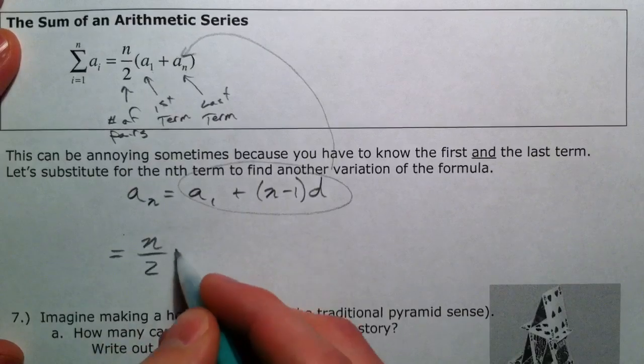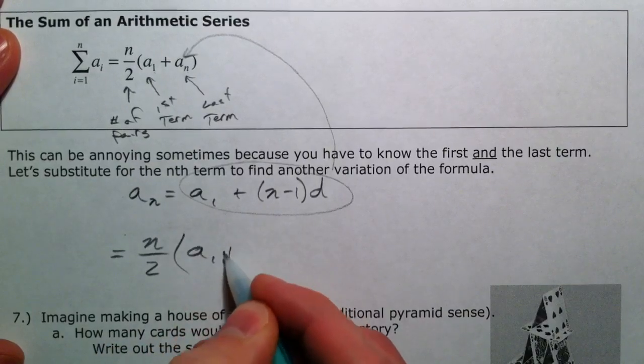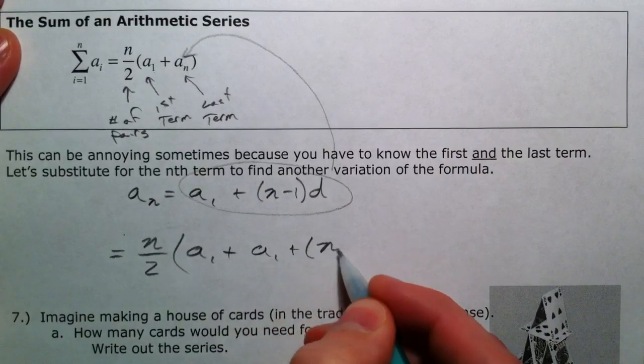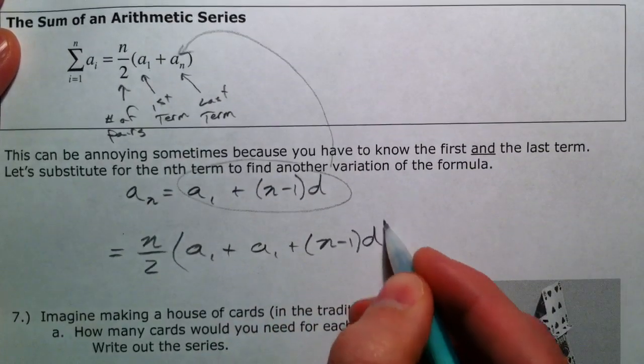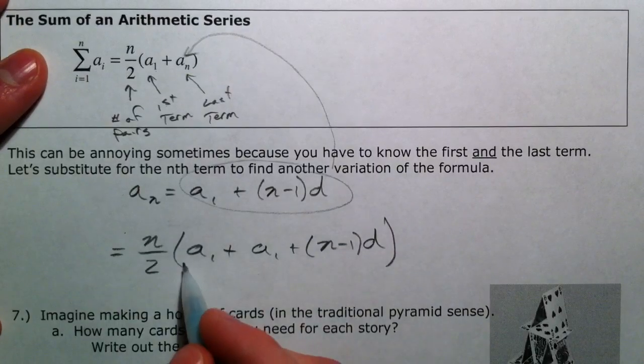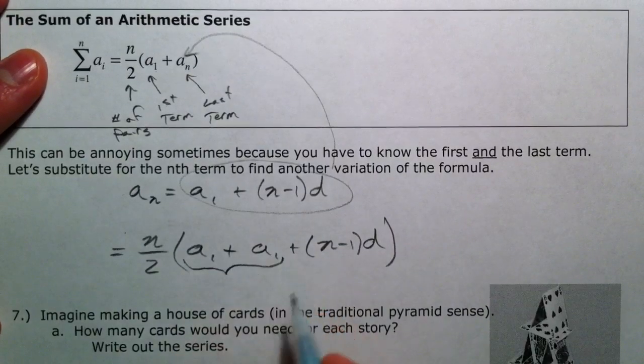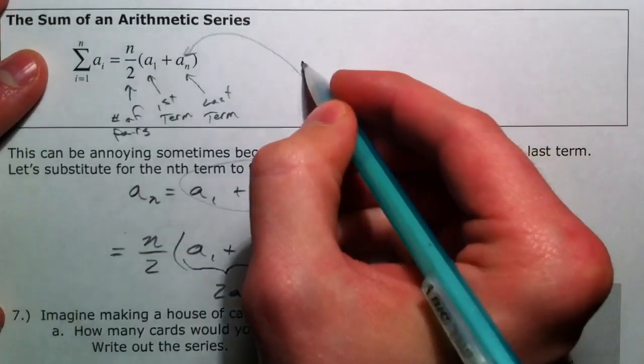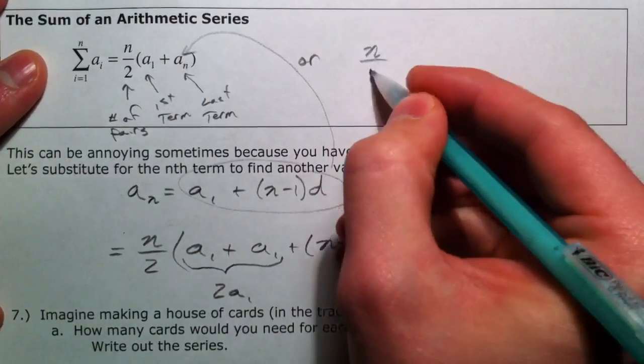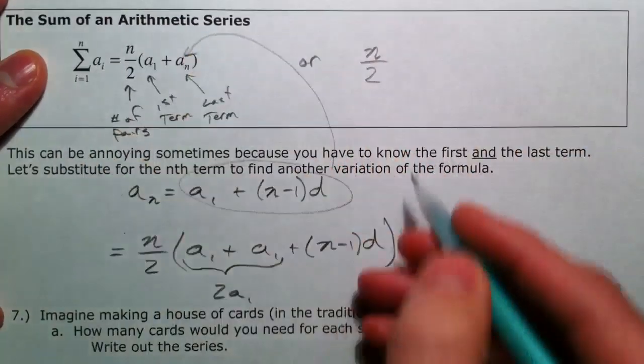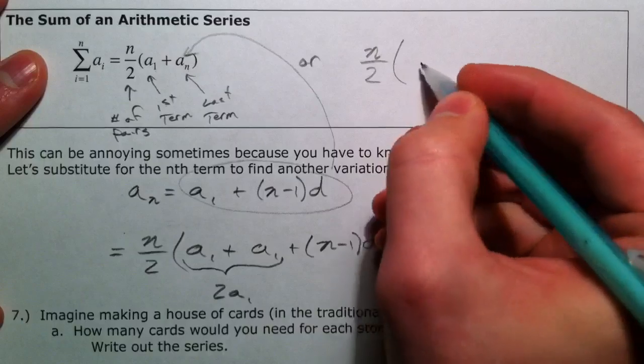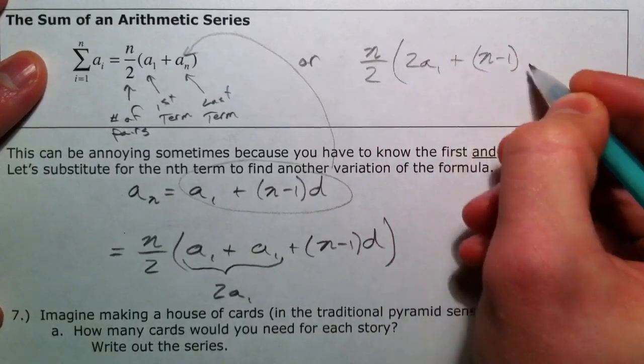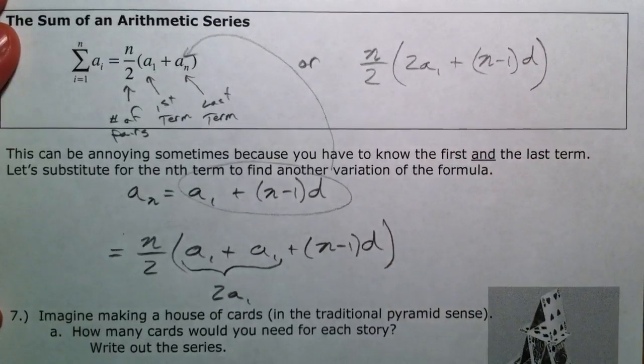So it could be n over 2, a sub 1 plus, instead of writing a sub n, a sub 1 plus n minus 1 times d. And just for ease, we'll just combine these two terms rather than simplify out. So that becomes 2 a sub 1. So another equation we can use is n divided by 2 times 2 a sub 1 plus n minus 1 times d. And there you have it.